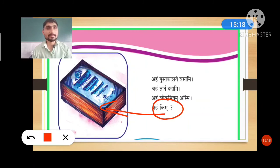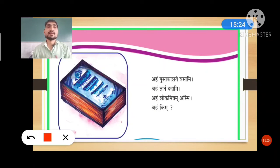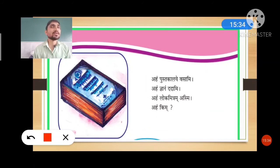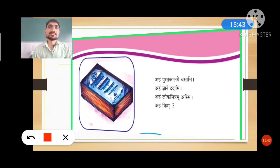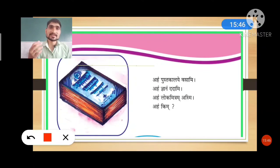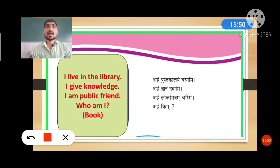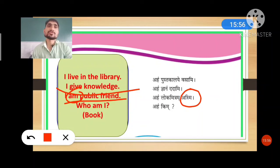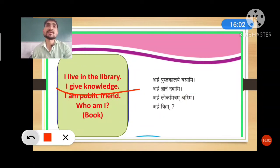Remember: ka is for feminine, kaha is for masculine, and kim is for neuter or non-living things. The concept: I live in the library, I give knowledge, I am a public friend — who am I? You must write 'I am' because asmi is given. The answer in Sanskrit is given in the book — it is a library.